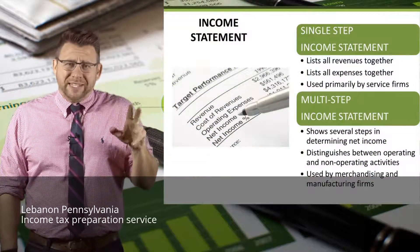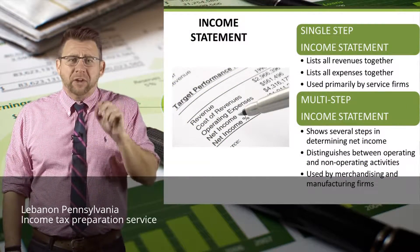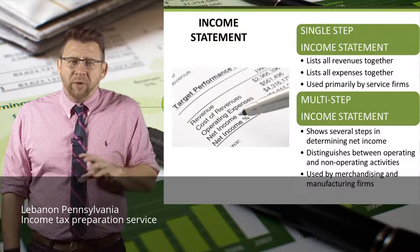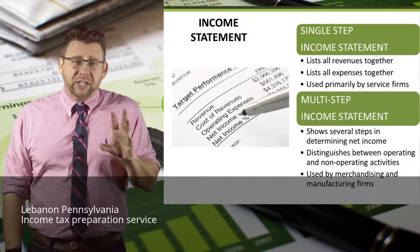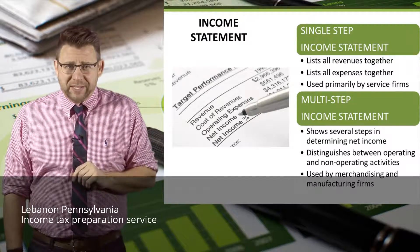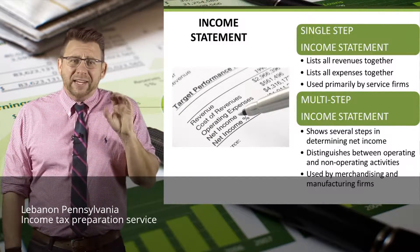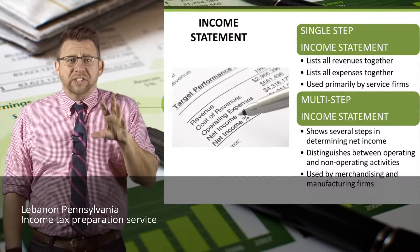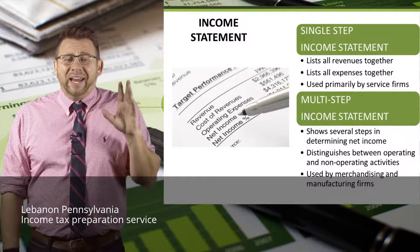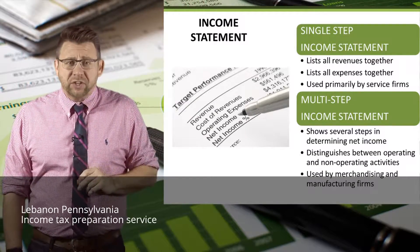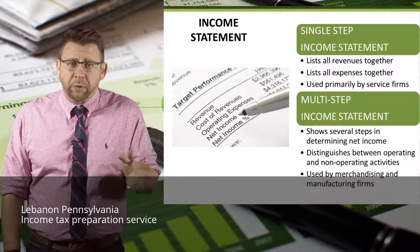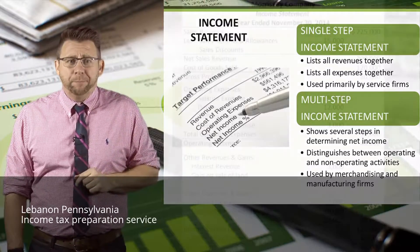A multi-step income statement still lists revenues and expenses, but it separates operating revenues and expenses from non-operating revenues and expenses, and divides the accounts into important subtotals that highlight areas of importance for investors and creditors. The subtotals include gross profit and operating income.